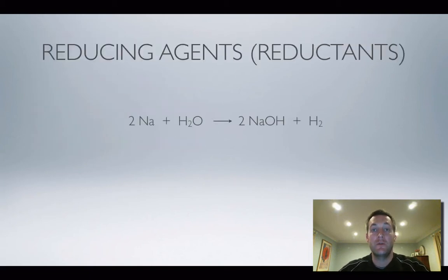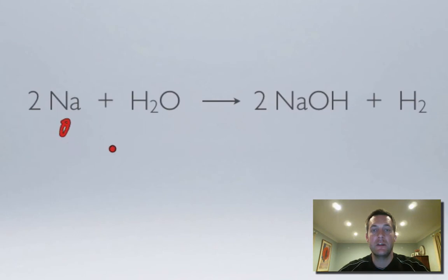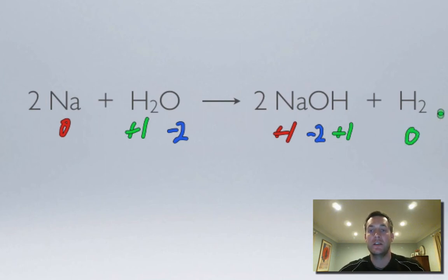Let's have a look at what we mean by reducing agents or reductants. Now, here's another equation where we could identify what's been oxidised and what's been reduced. So let's start off with the sodiums. They're an element, so they're zero. The hydrogens, they're plus one. And the oxygens are minus two. Now, sodium here is in a compound. So it's group one element, so it's going to be plus one. Oxygen minus two, unless it's in a peroxide, but it's not here. And hydrogen plus one, unless it's in a metal hydride, but it's not here. And here's hydrogen in the zero oxidation state, or with an oxidation number of zero, because it's an element.